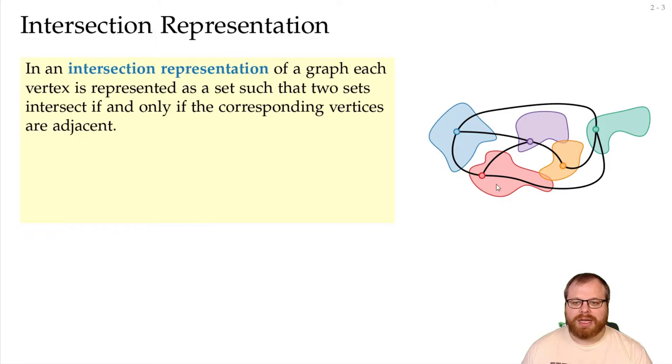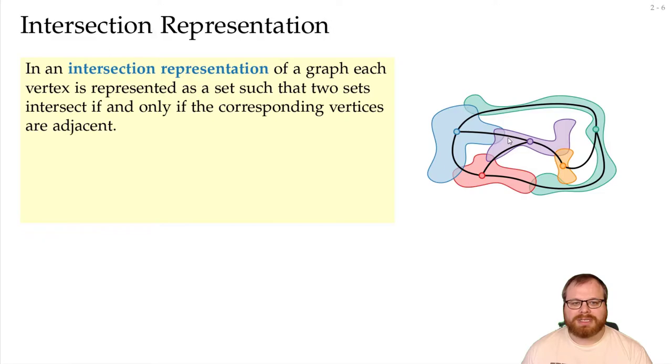On the other hand, the blue and the red do not intersect, so this is not a correct representation, but we can extend it. Also, we can see that the red and the orange do intersect, but there is no edge between them, so we are not allowed to have this intersection and have to remove it. And if we also make sure that we have these edges here, then we get a representation like that. So from a graph, we can get an intersection representation like this.